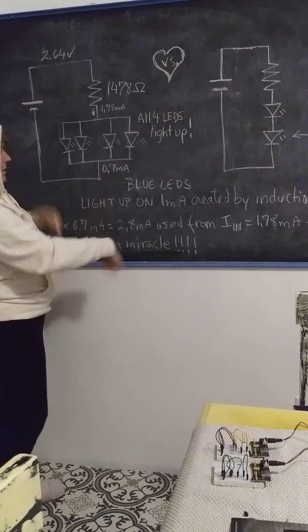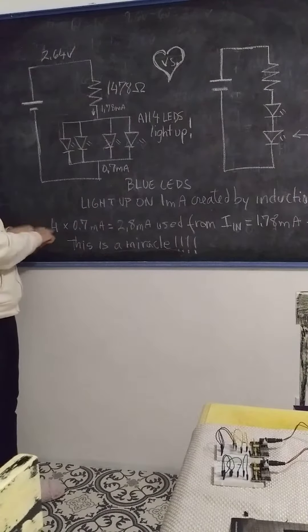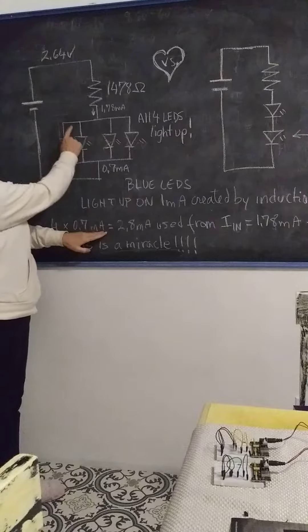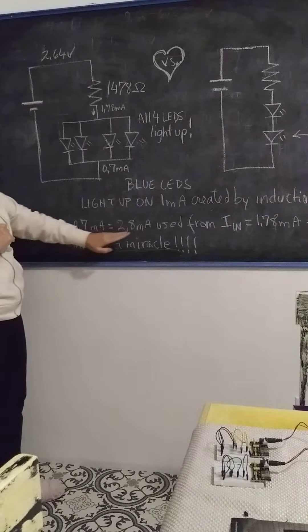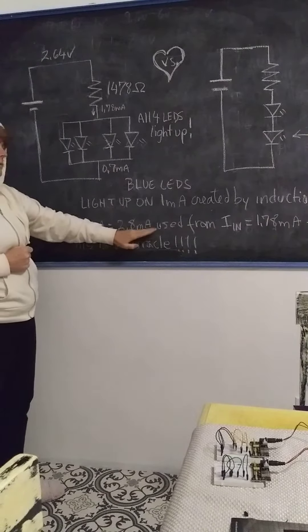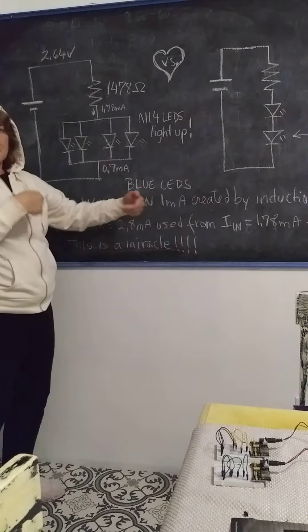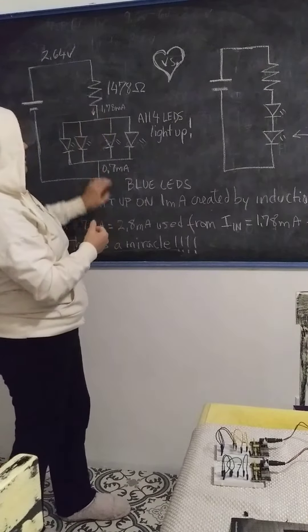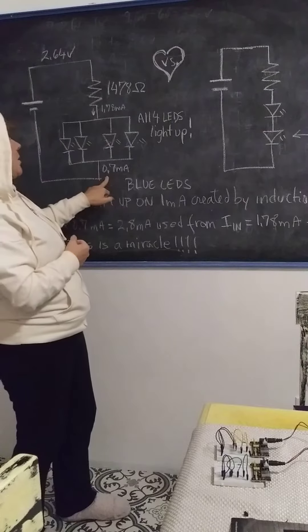If we multiply 4 times 0.7 milliamps for each one of them, we should come up with 2.8 milliamps being used from what's going in, subtracting what's going out,